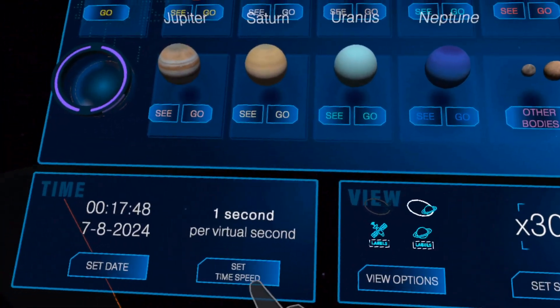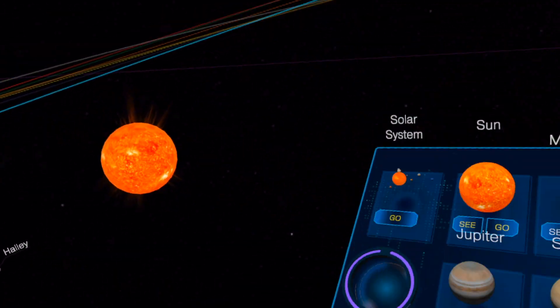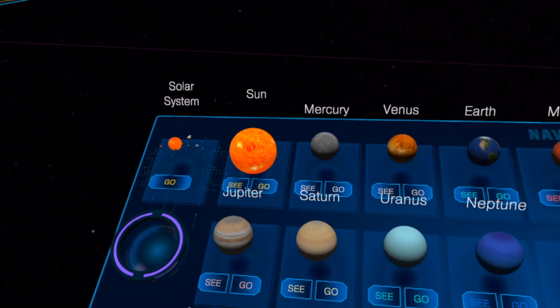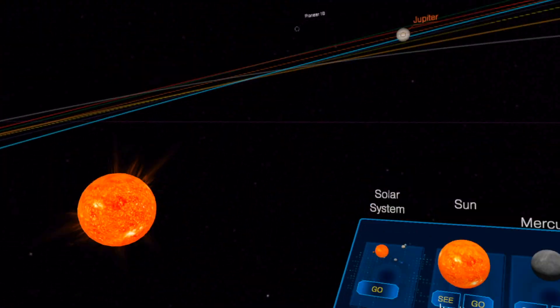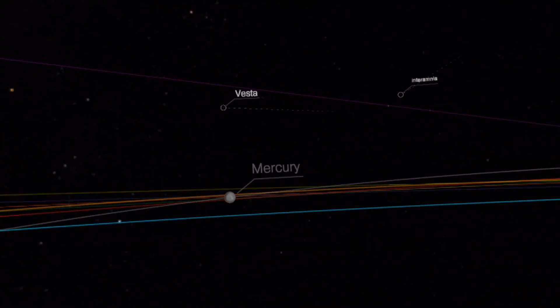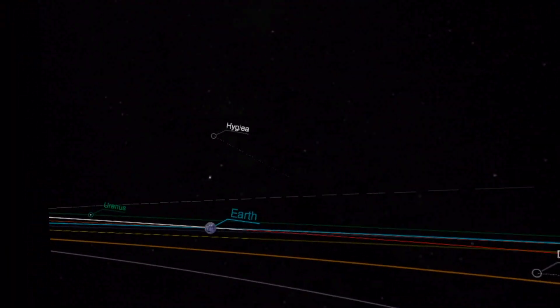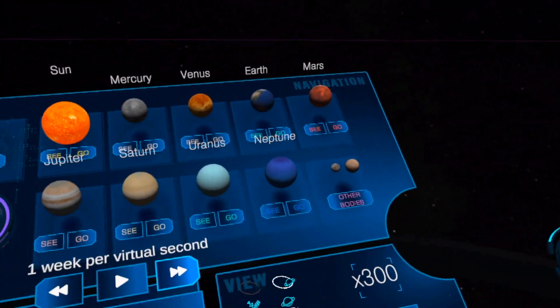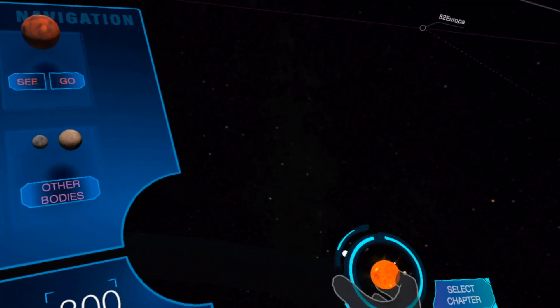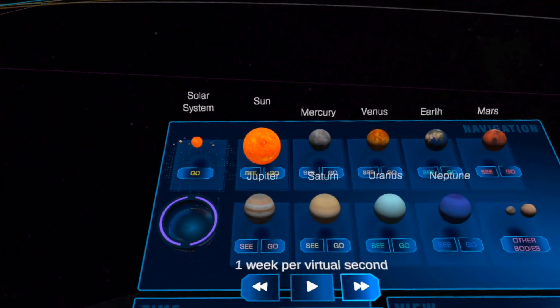Now I can set the time speed. Wow, and now I can see everything turning like that - Mercury. I can see the whole system like that, but I cannot take it. I cannot turn it around like that.